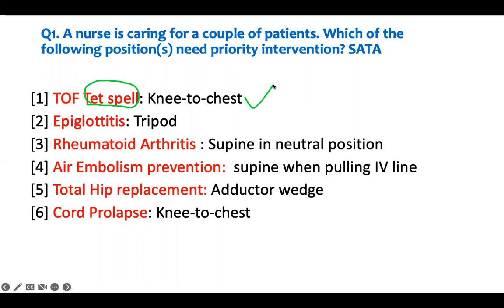Number two - epiglottitis. A patient who is having this problem has an airway issue - it's a B-sharp moment. They're going to have an airway issue, and to prevent that, they themselves naturally will put themselves in a tripod position. They sit in the chair, lean forward, and put their hands on their knees. That is the tripod position - that's what they do in epiglottitis. So this is the right treatment the patient has to be in to ensure they don't get in trouble.